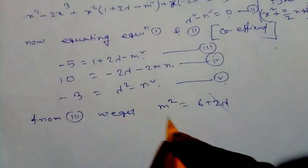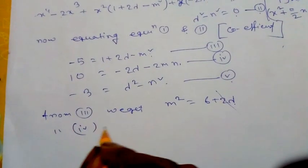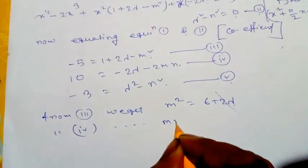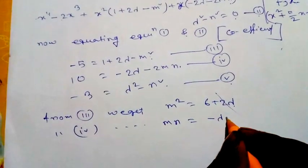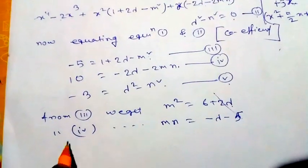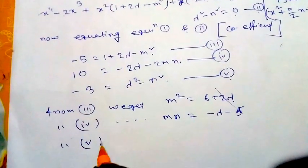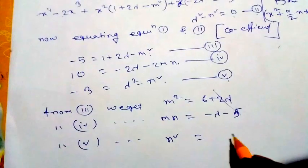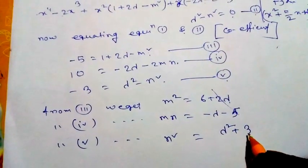From equation 4, we get mn = -λ - 5. From equation 5, we get n² = λ² + 3.